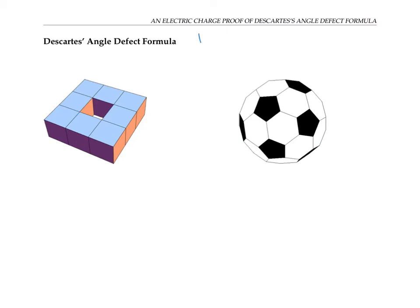Although the most standard version of Descartes' angle defect formula is written in terms of radians, I'm going to stick with degrees because most people are more comfortable working with degrees. So this is the formula we're going to try to prove. I've drawn two sample polyhedra here: the first is a torus-shaped surface with lots of square faces, and the second is a spherical surface with a soccer ball pattern of pentagon and hexagon faces. I'll use these examples to make the proof more concrete, but the idea should apply to any polyhedral surface.